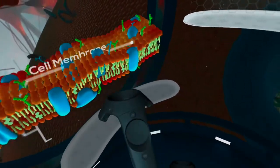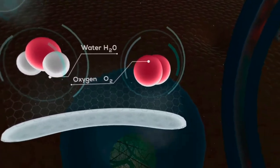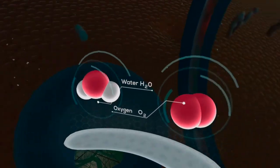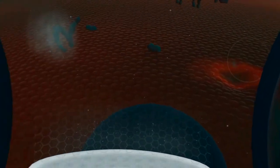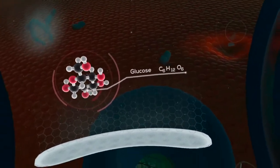Water and oxygen pass freely through the cell's membrane. Larger molecules, like glucose, enter through small pumps or channels.